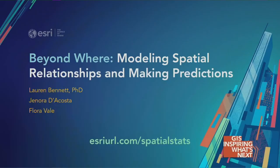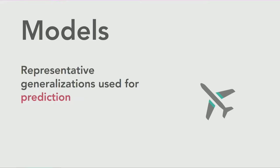What we're going to talk about today is essentially making predictions. This workshop was for a long time called Beyond Where: Modeling Spatial Relationships, and we focused exclusively on OLS and GWR. Today we're going to spend a little bit of time at the beginning talking about OLS and GWR, and then we're going to spend the second half talking about the new forest-based classification and regression tool. At the heart of all of that is the concept of a model — a thing that represents reality in some useful way that we can use to make predictions.